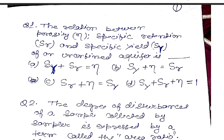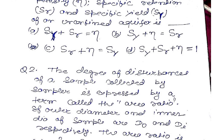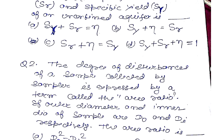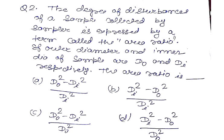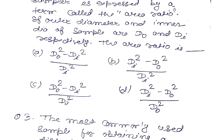The second question is the degree of disturbance of a sample collected by a sampler is expressed by a term called the area ratio. If the outer diameter and inner diameter of sampler are DO and DI respectively, the area ratio is. We have these four options.